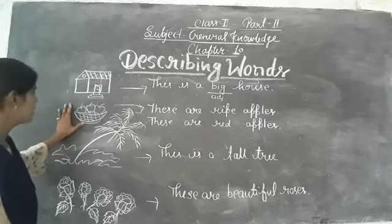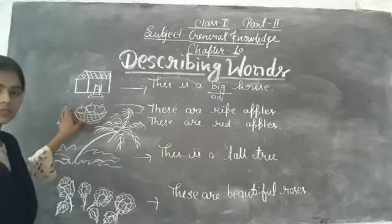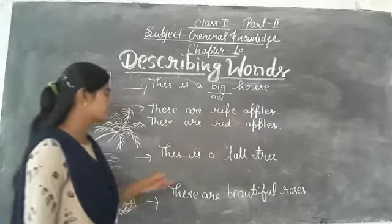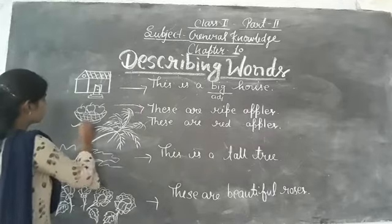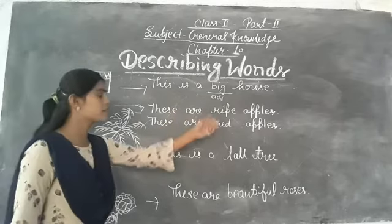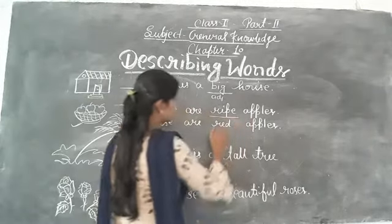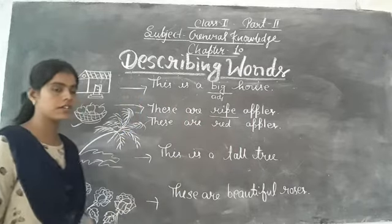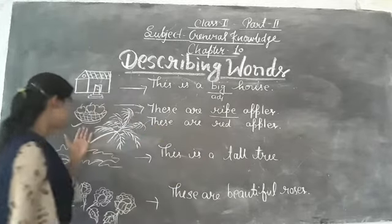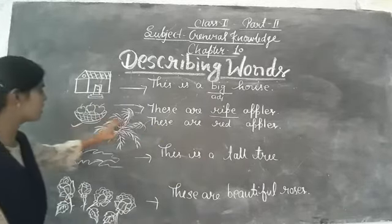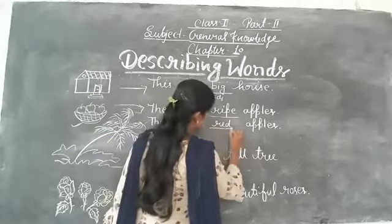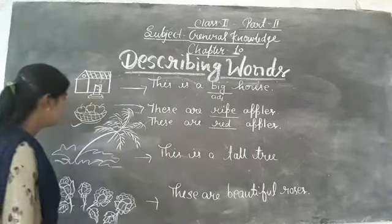What is this? You can see these are apples. But how are these apples? These are ripe apples. So 'ripe' is the adjective here. You can also say: how are these apples? These are red apples. So 'ripe' and 'red' are adjectives here.